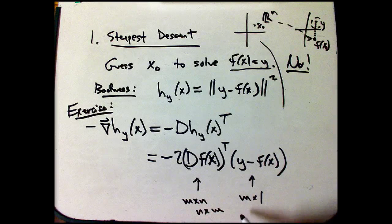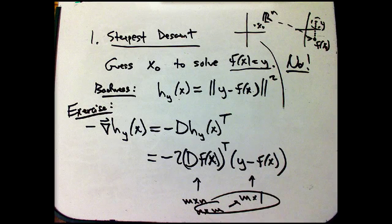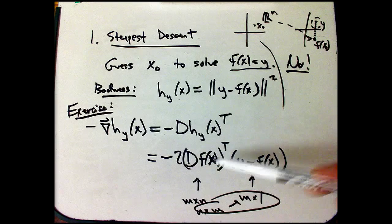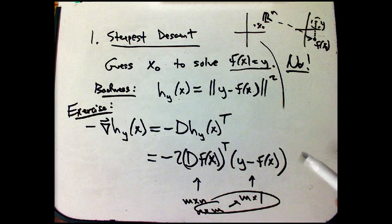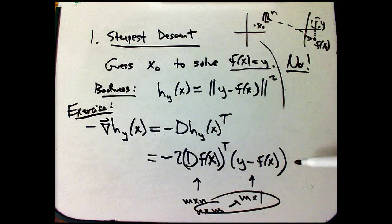So if I transpose this, this is n by m, and then these do match. So there's an explicit formula for this, is the main thing, and we're going to use this later when we bring this back into the proof of the inverse function theorem.